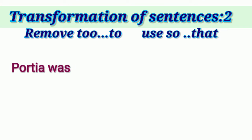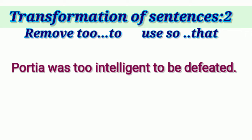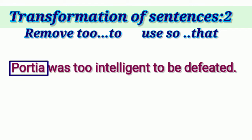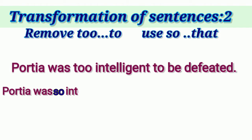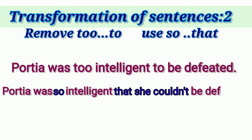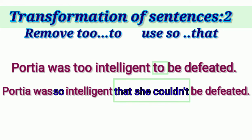Let us take another example: 'Posha was too intelligent to be defeated.' Here the sentence is in past tense — 'was' indicates past tense — and the subject is Posha. The sentence will be: 'Posha was so intelligent that she couldn't be defeated.' We use 'so' in place of TOO² and 'that she couldn't' in place of TO².